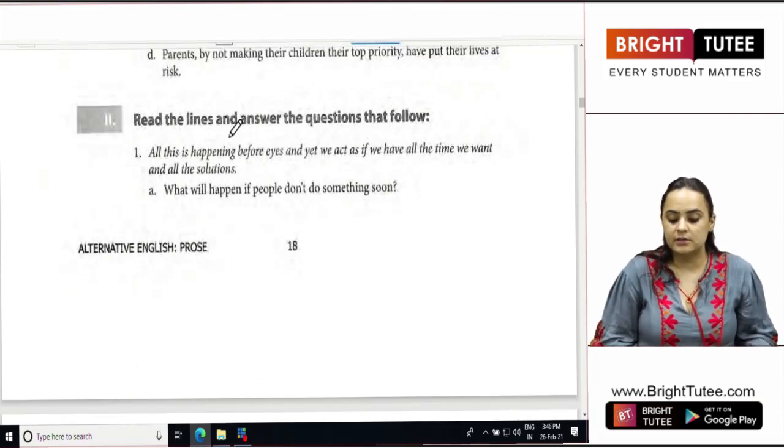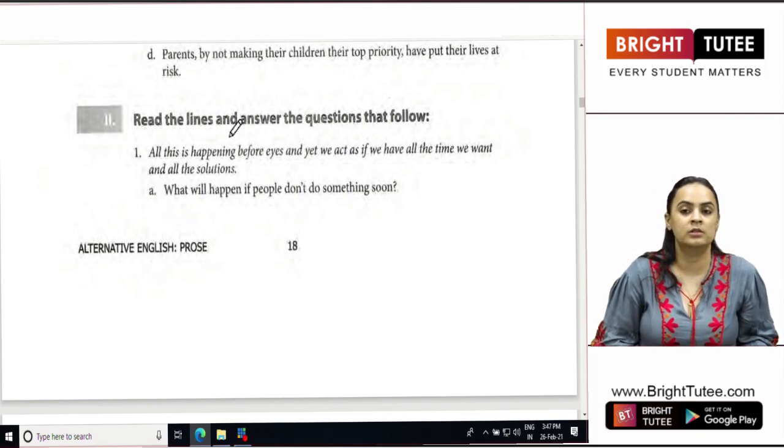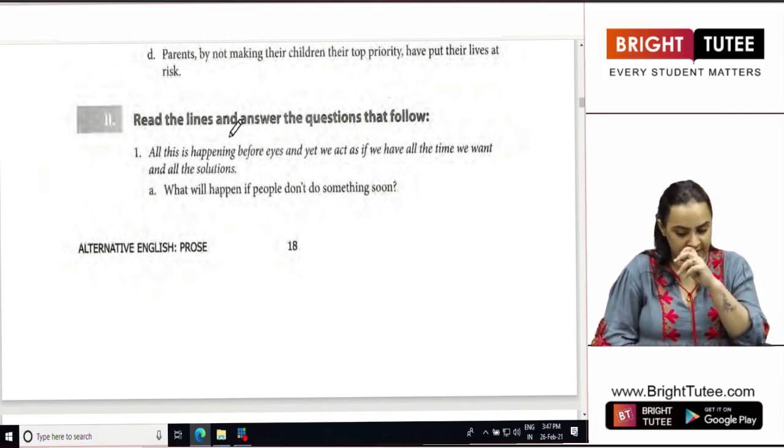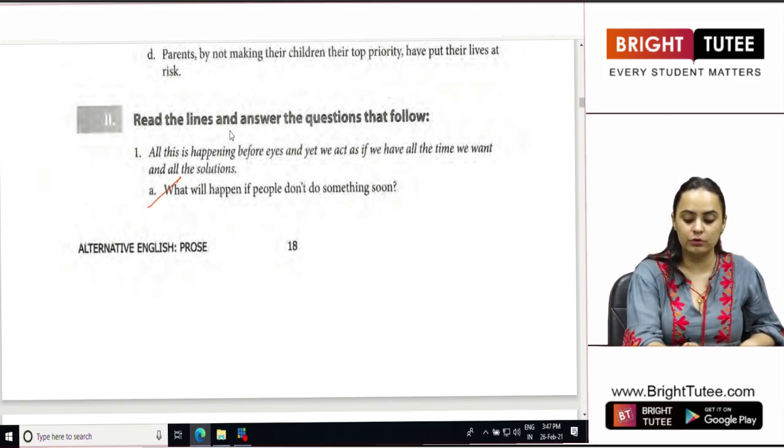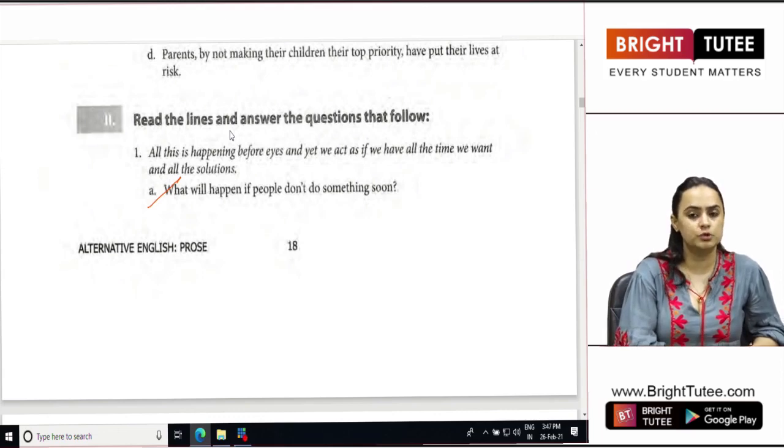Read the lines and answer the questions that follow. All this is happening before our eyes and yet we act as if we have all the time we want and all the solutions. What will happen if people don't do something soon, if we are not coming up with a solution to this?